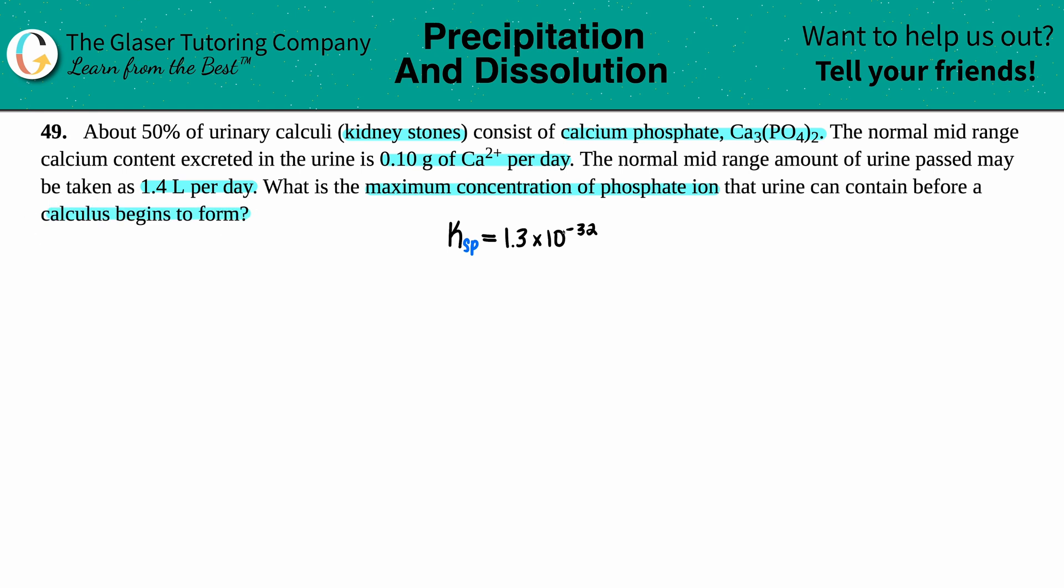So we just want to know what's the maximum amount of phosphate that can be in the urine before someone develops a kidney stone? Well, it's taken from the information that they gave us. They said that the normal mid-range calcium content excreted was 0.1 grams of Ca per day, and the normal amount of urine passed maybe 1.4 liters. Now remember, kidney stones are solid calcium phosphate. Kidney stones consist of solid stones. So we're dealing with things that can dissolve, but if you have too much, you're going to form a solid in the form of calcium phosphate. When we're talking about precipitating or forming a solid, that's solubility product, Ksp.